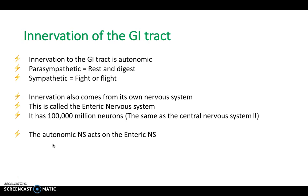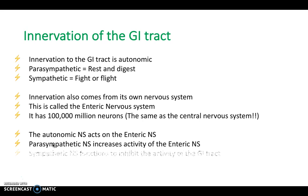The autonomic nervous system acts upon the enteric nervous system. As you can imagine, with the parasympathetic nervous system being all about rest and digest, it increases the activity of the enteric nervous system — it increases the activity of the gut's nervous system. On the other hand, the sympathetic nervous system functions to inhibit the activity of the GI tract by blocking the enteric nervous system.